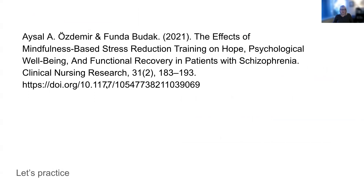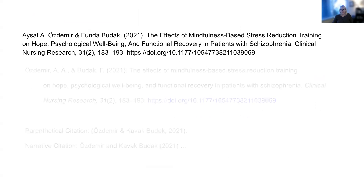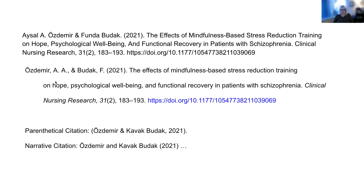As a bit of practice, you could pause the video here, take a look at this source, and try to figure out how to put it in APA format. This would be the correct way to set up this source. You'll notice the first names are listed in APA format with only the initials: last name, first two initials, then last name, first initial. Then you have the article title with only the first word capitalized, followed by the journal name in italics and title case, the volume number, the issue, the page range, and the hyperlinked DOI address. If you were to refer to these sources in citations in the paper, they would look like this.